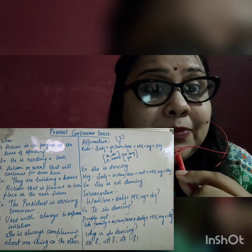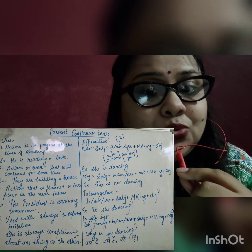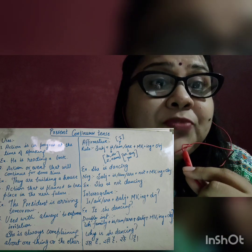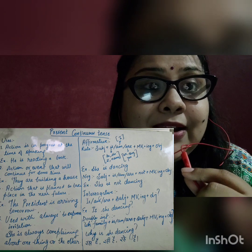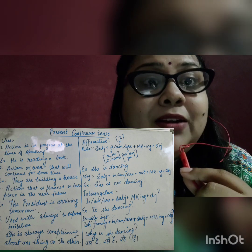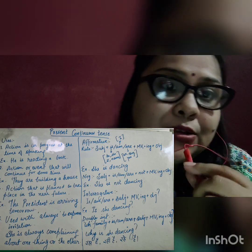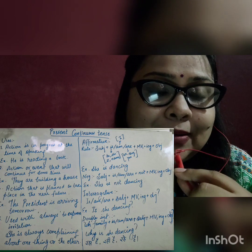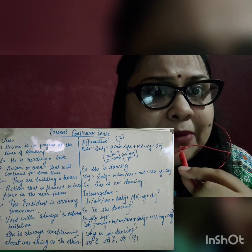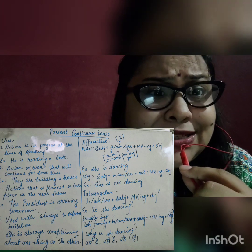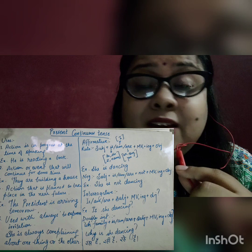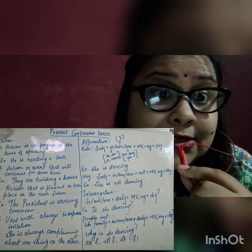The very last application, dear students, is when we are expressing irritation. When we use 'always,' we can also make Present Continuous sentences. For example: 'She is always complaining about one thing or the other,' or 'He is always disturbing.'